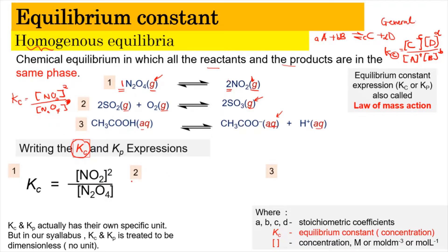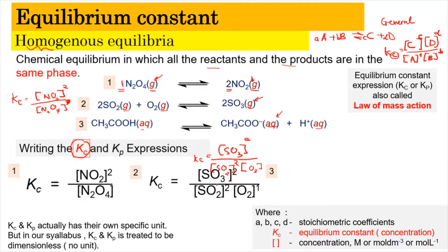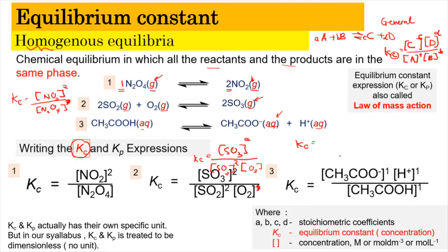For the second equation, the Kc expression has the concentration of product SO3 to the power of 2, divided by the concentration of reactant SO2 to the power of 2 and oxygen to the power of 1. The power of 1 can be ignored. For the third equation, the Kc expression has the product concentration divided by the reactant concentration, with stoichiometry of 1 for each, which can also be omitted.